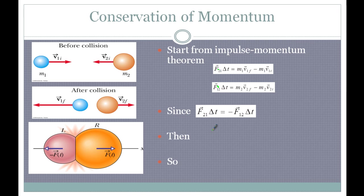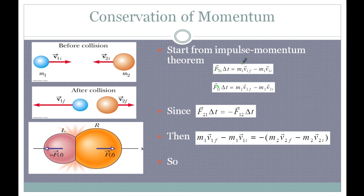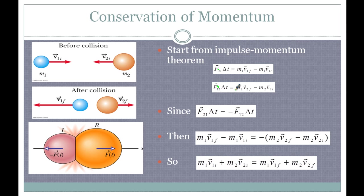The time they're in contact with each other is also going to be the same — you can't have two different times. So therefore, the momentum of the first times the final velocity of the first minus the momentum of the first times the initial velocity of the first equals the negative of the momentum for the second. Putting it all together, getting rid of the negative sign and bringing all the finals to one side and initials to the other, we get: P1 initial plus P2 initial equals P1 final plus P2 final.